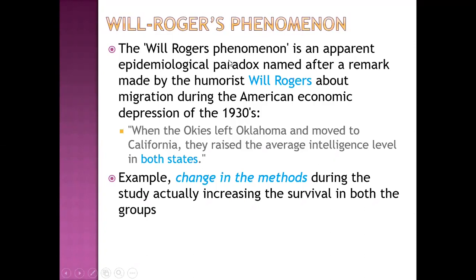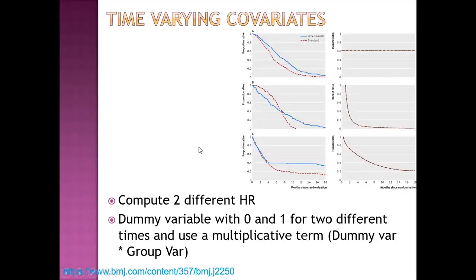The Will Rogers phenomena is an apparent epidemiological paradox named after a remark by humorist Will Rogers about migration during the American economic depression in 1930. In survival analysis, it refers to the effect of change in methods during a study which may actually increase survival in both the test and control group. Regarding time-varying covariates: when hazard ratio changes over time due to crossing survival curves, possible solutions include computing two different hazard ratios by dividing into two time periods, creating a dummy variable for two different time periods using a multiplicative interaction term, or doing stratified Cox regression.